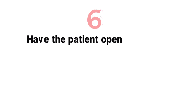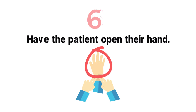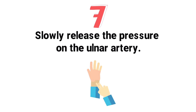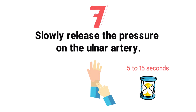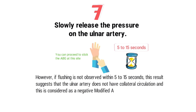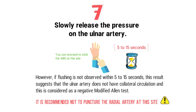Step 6: Have the patient open their hand to check whether the palm and fingers have blanched. Blanching means that you have completely occluded the radial and ulnar arteries — the hand should have a whitish appearance. Step 7: Slowly release the pressure on the ulnar artery while keeping the radial artery occluded. If the patient's hand flushes pink within 5 to 15 seconds, this means the ulnar artery is patent and has good blood flow — this is a positive modified Allen test and you can proceed to stick the ABG. However, if flushing is not observed within 5 to 15 seconds, this is a negative modified Allen test, and it is recommended not to puncture the radial artery. You should either try the other hand or move on to the brachial artery.